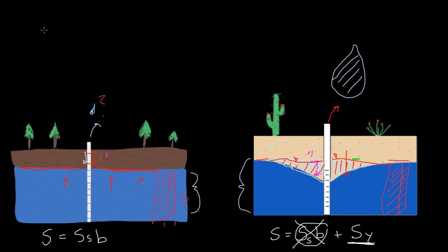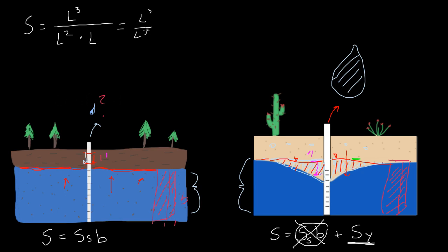Let me review the units for storativity. Storativity equals the volume of water — that's length cubed — released from storage per unit surface area — that's length squared — per decline in hydraulic head, which is another length unit. So we're left with no units: L³ over L³, which is 1 over 1 — dimensionless. That's the unitless dimensional quality of storativity.